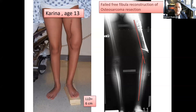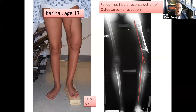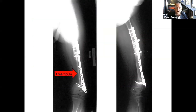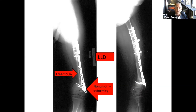This case illustrates that tumor reconstruction involves resection of the tumor and reconstruction of the bone defect, but there are also other considerations — including subsequent growth from the growth plate that may be affected and the deformities and complications that can occur. To illustrate: there was a non-union with deformity at the distal junction of the free fibula, plus leg length discrepancy.